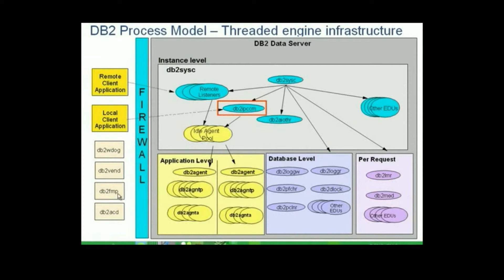For example, DB2FMP is useful because it separates the DB2 engine code and address space from other code used for stored procedures and user-defined functions. If the stored procedure or user-defined function were running in the same address space as the DB2 engine and were incorrectly coded, they could bring DB2 down. That's why it's important to have them running in a separate process, which is DB2FMP.